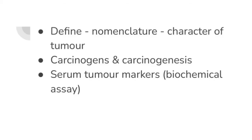Now we'll talk about neoplasia, which is again the most important aspect of general pathology. From the neoplasia chapter, questions can include: define neoplasia, nomenclature, and characteristics of a tumor — forming a full 15-mark question. Next, carcinogens and carcinogenesis is also a questionable topic. Then there is a short note type question on serum tumor markers or biochemical assays. So this covers all the topics we have listed for general pathology.